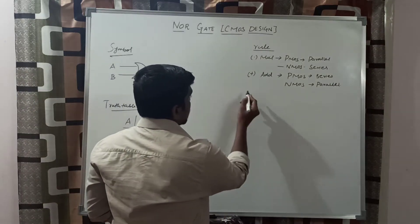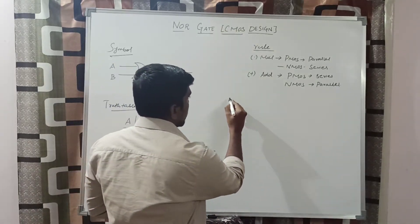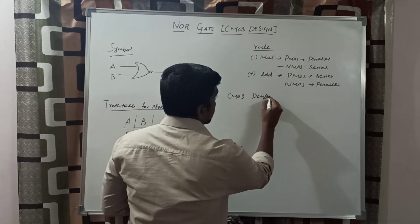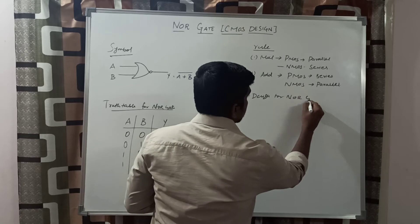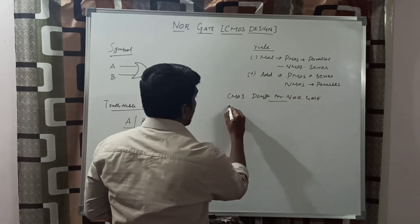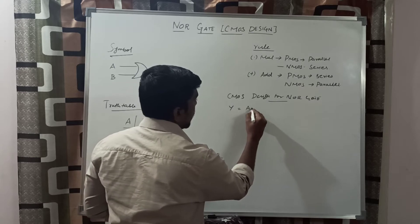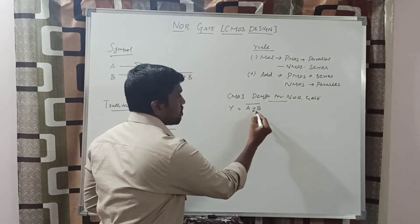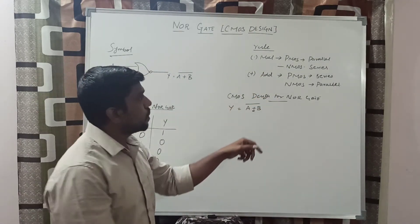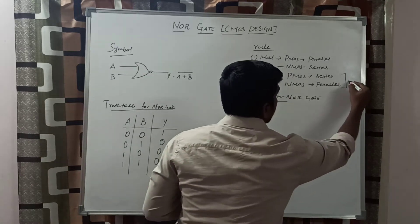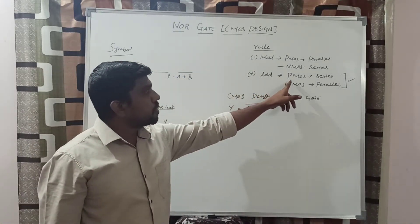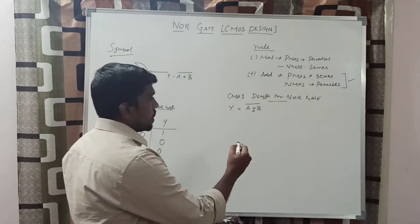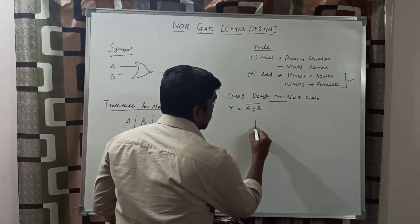Now we can transform the logical level to CMOS design. The output equation of NOR gate is Y equal to A plus B, the whole bar. Here, the operation is plus, so you follow the second rule. PMOS is connected in series and NMOS is connected in parallel. First, you draw the PMOS pull-up circuit.